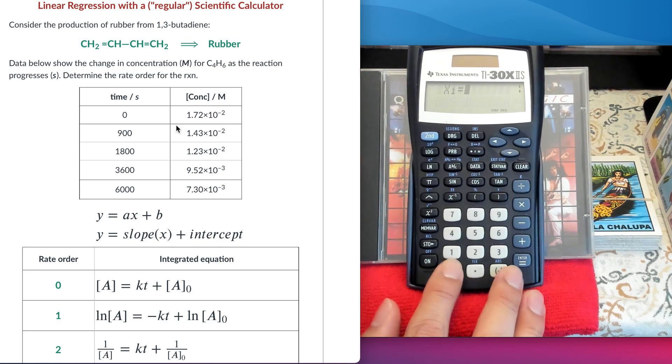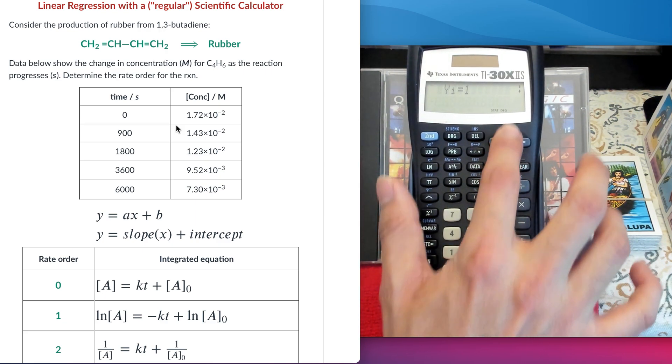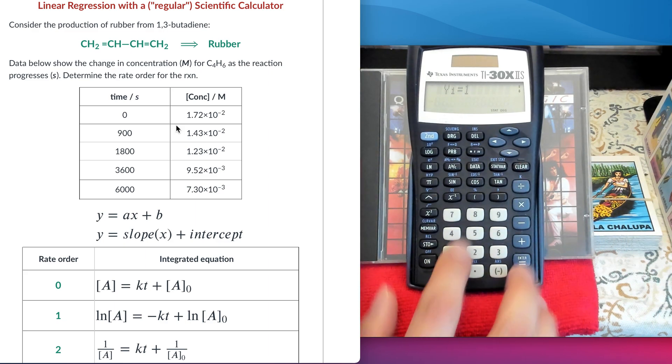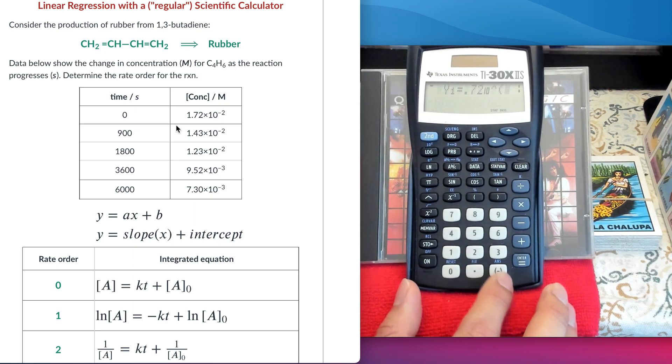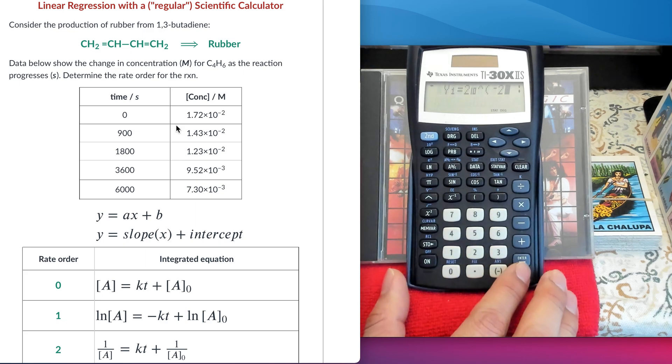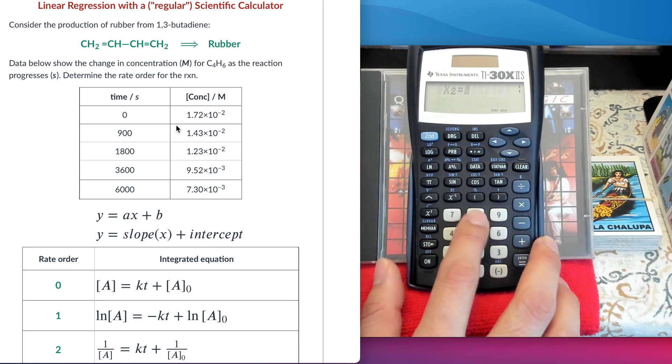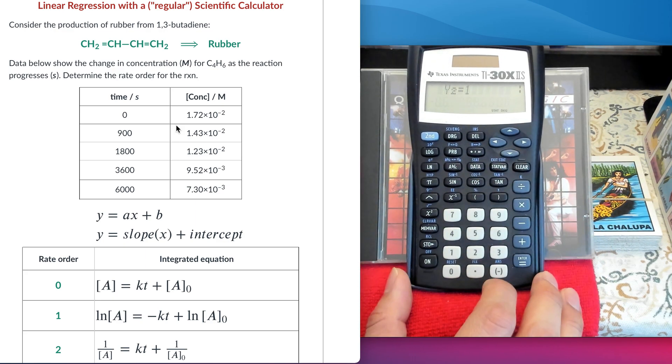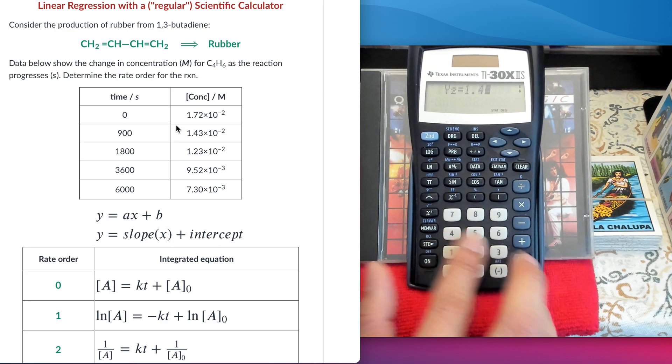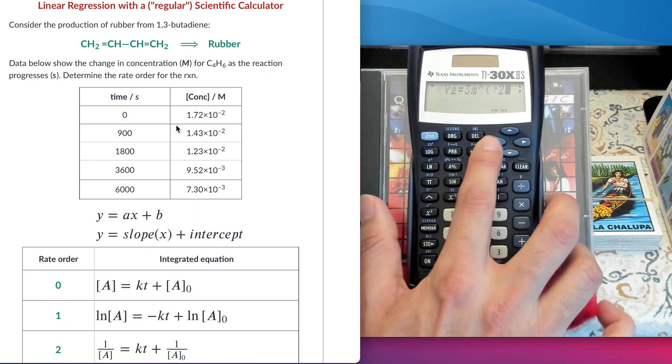I'm going to be using these arrows to move through the x and y parameters here. So, I enter the concentration, and I'm going to be doing this for every single one of the data points in the table. Don't forget to use the arrows to move to the next one. The second time is going to be 900. And then, the arrows. So, I can move to the next one. I'm going to enter the second value of the concentration.